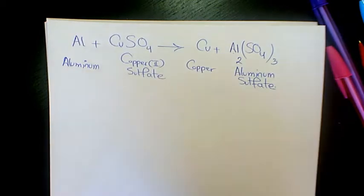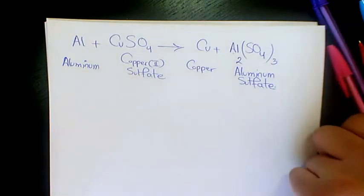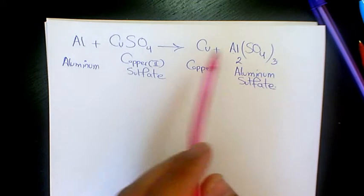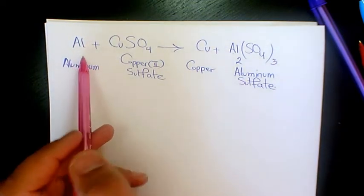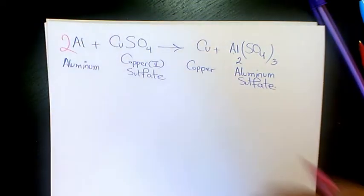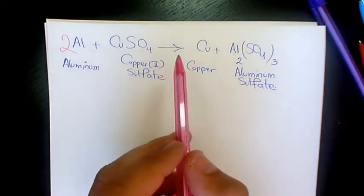balance this reaction. First, I'm gonna start with aluminum. In the product side we have two atoms and in the reactant side we have one, so I'm gonna put 2 in here to make it balanced. Copper, we have one in here, one in here, so it's balanced already. Let's look at sulfur.